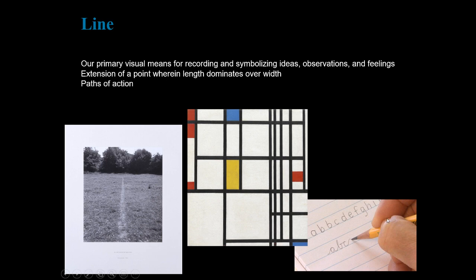The image of handwriting reinforces the notion of line being our primary means of recording. Lines are long, narrow marks generally made by drawing with a tool, such as a pencil or brush. Line can be defined as the extension of a point in which length is always greater than width. Although lines can be of various thicknesses, we often see lines when we look at the edges of surfaces — the places where one object or plane appears to end and another object or space begins.